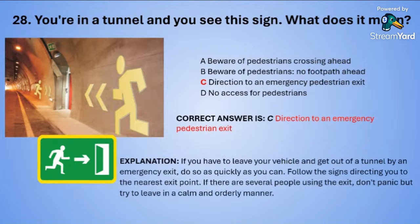If you have to leave your vehicle and get out of a tunnel by an emergency exit, do so as quickly as possible. Follow the signs directing you to the nearest exit point. If there are more people using the exit, don't panic — leave in a calm and orderly manner. The green and yellow colour typically indicates some kind of emergency access.